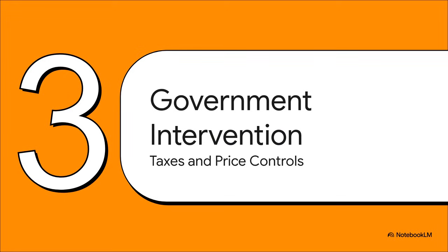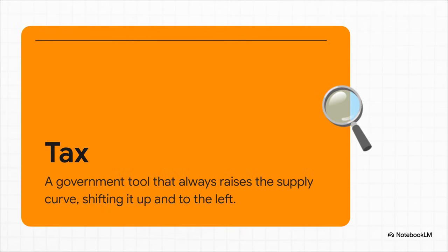So we've seen how things like your income or the price of other goods can shift demand. But what happens when a really powerful external player enters the game — like the government? Let's look at what happens when a new tax is introduced into a market. You might think a tax is an external factor that changes demand, but it's not. A tax on a product is really an added cost for the producer — it suddenly becomes more expensive for companies to make and sell that item. So a tax doesn't move the demand curve one bit. Instead, it directly hits the supply curve, pushing it up and to the left.